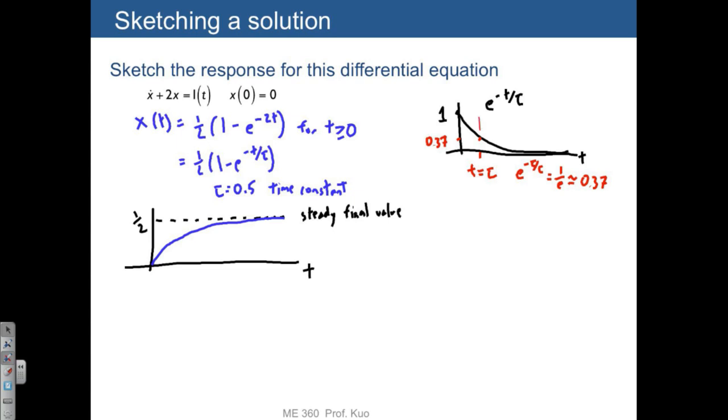That also means that this distance here is about 0.63, so let's return to the graph on the left, and we can immediately point out that after one time constant, we should be about 63% of the way.